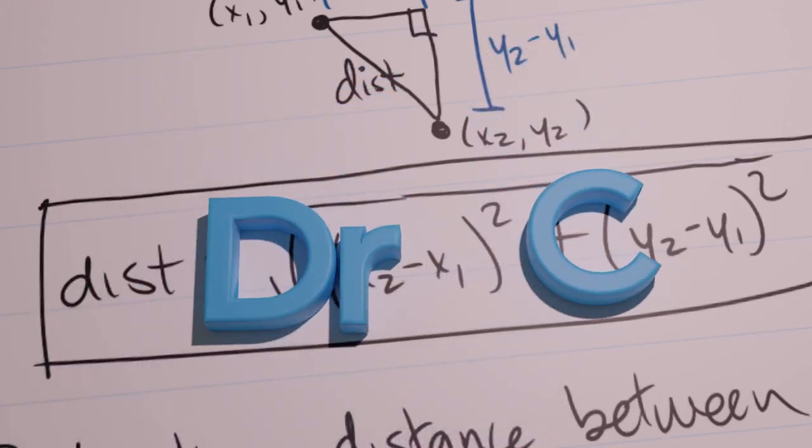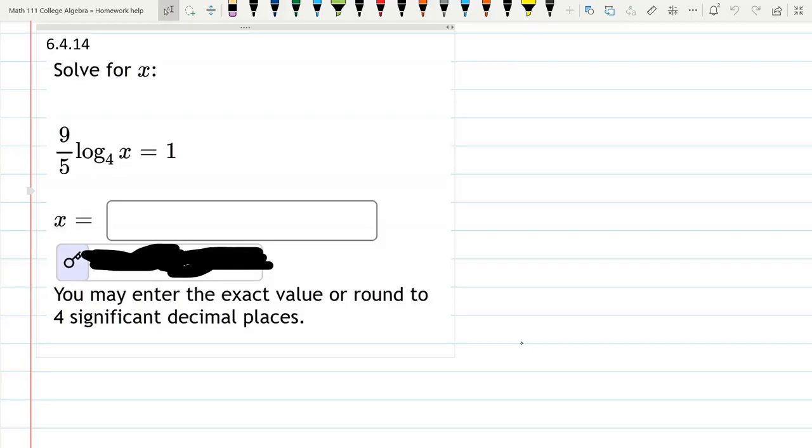In this problem we have a log equation and we're going to solve for x. Now x is right here, so we're going to have to move everything else to the other side.